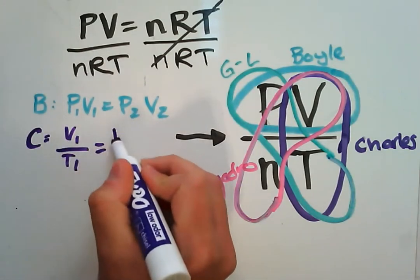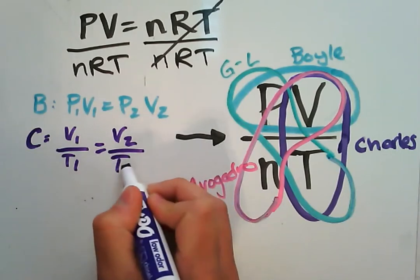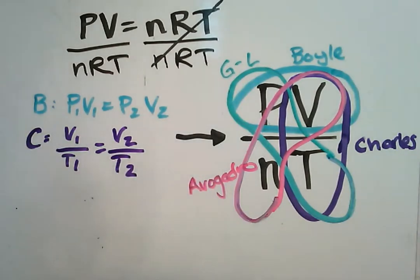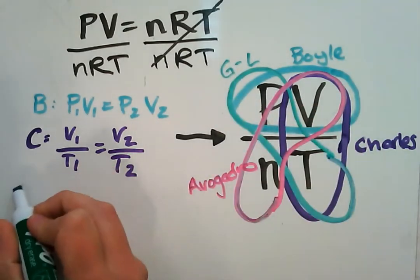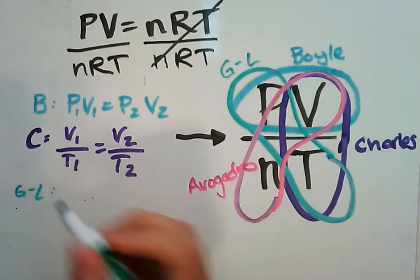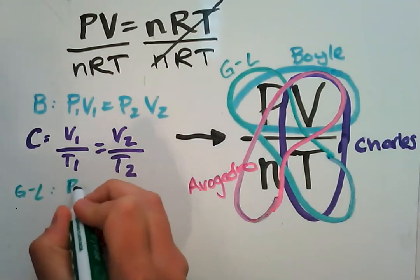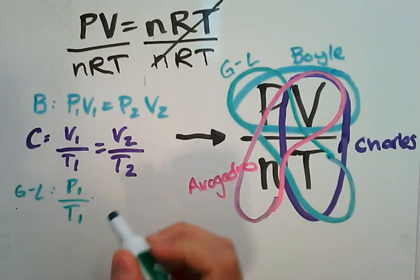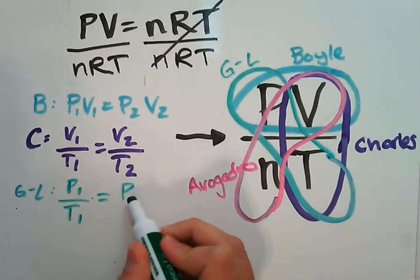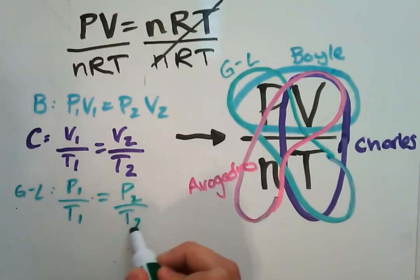Okay, then we have Charles's law: v1 over t1 equals v2 over t2. You see v over t in this equation over here. Next we have Gay-Lussac's law relating p1 over t1 equals p2 over t2.